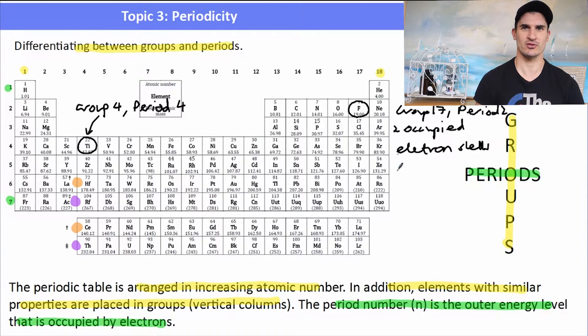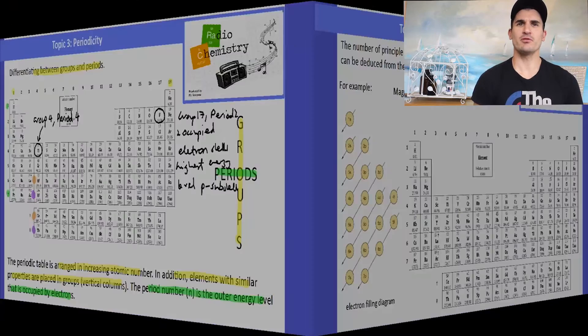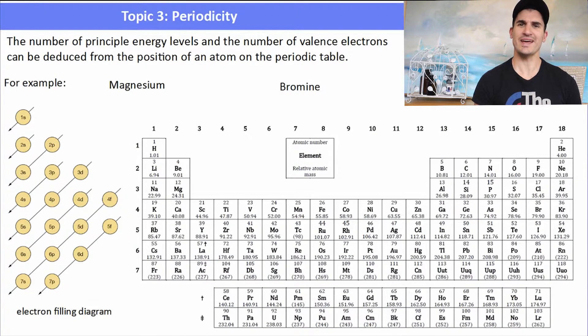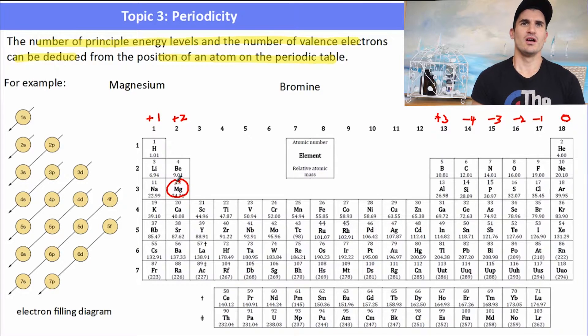Okay, the number of principal energy levels and the number of valence electrons - well, that can be deduced from the position of an atom on the periodic table. So remember the electron filling diagram with the S, P, D, and F electrons. And if we are asked to do this, we would need to look at the electron configuration of one of the atoms.